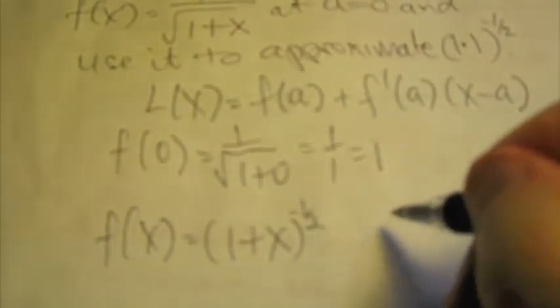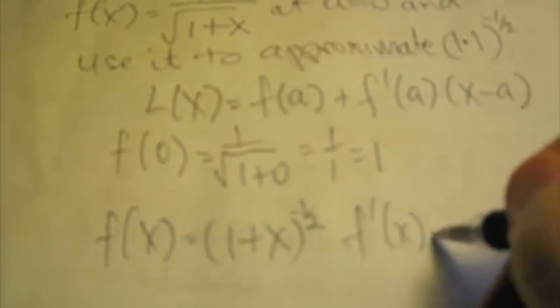So I've got that. Our function can also be written as (1 + x)^(-1/2). So our derivative of this function is going to be equal to -1/2 by (1 + x)^(-3/2).